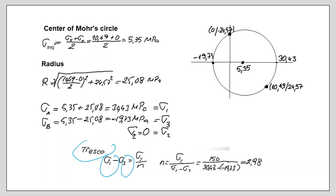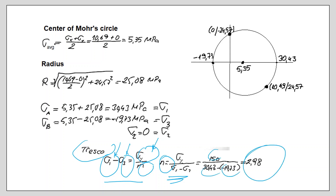Applying the Tresca criterion: sigma 1 minus sigma 3 equals sigma yield divided by the factor of safety. With the known yield strength and principal stresses, the factor of safety is calculated. Putting in the numerical values, the factor of safety is found to be 2.98. In this video, we solved two failure criteria application problems.